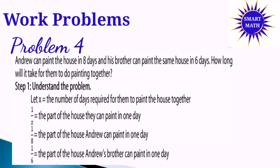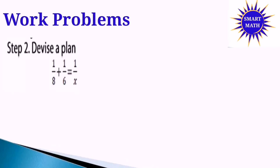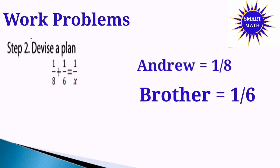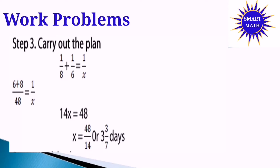1/X equals the part of the house they can paint in one day. 1/8 equals the part of the house Andy can paint in one day, and 1/6 equals the part of the house Andy's brother can paint in one day. Step 2: Devise a plan. Our equation is 1/8 + 1/6 = 1/X, where 1/8 represents 1 house over 8 days for Andy, and 1/6 represents 1 house over 6 days for his brother.